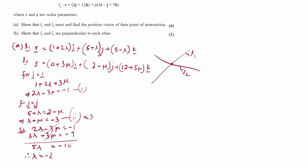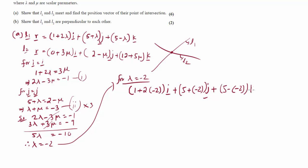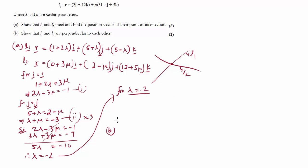Now we can find the point of intersection. With lambda equals minus 2, substituting into L1: 1 plus 2 times minus 2 gives minus 3 for the I component; 5 plus minus 2 gives 3 for the J component; and 5 minus minus 2 gives 7 for the K component. So the intersection point is minus 3I plus 3J plus 7K.